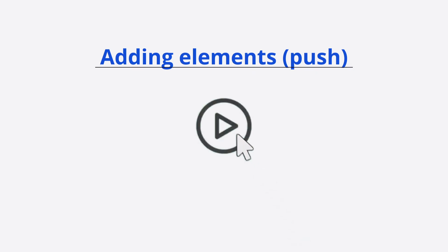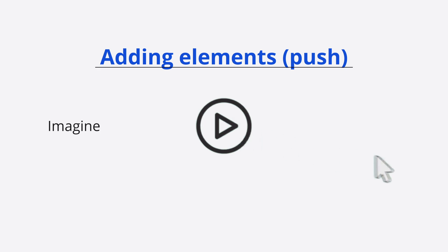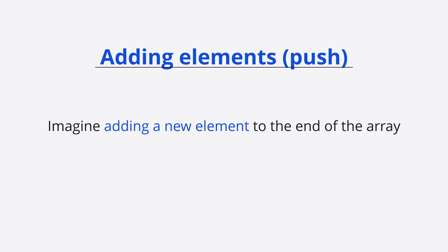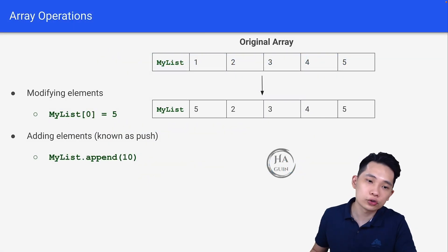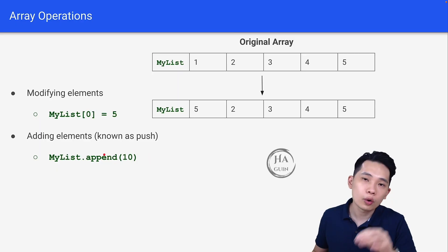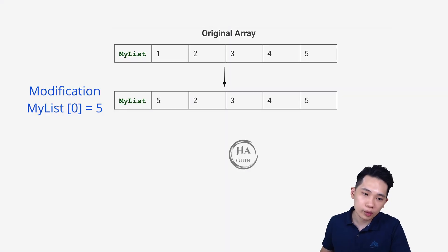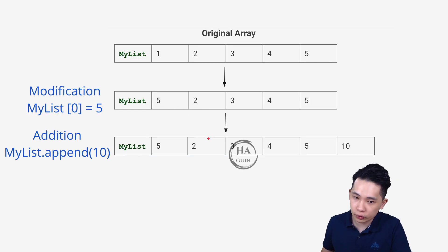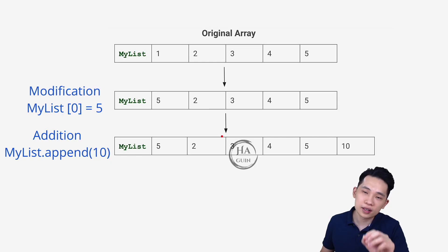The next operation will be adding elements, known as push. Later on we will learn about stacks, which will talk more about push. For now, you can just imagine that you're adding a new element to the end of the array. You can do my_list.append(10). So what will happen is that a new element 10 is added to the end of the array.